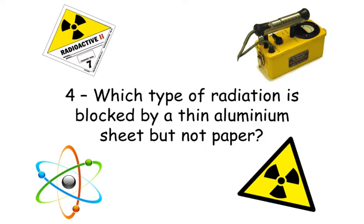Question number four: Which type of radiation is blocked by a thin sheet of aluminium, but not paper?